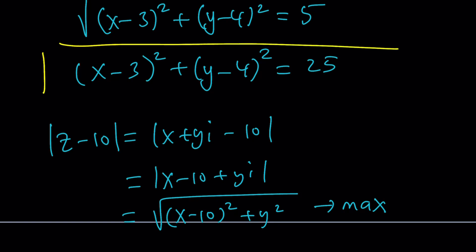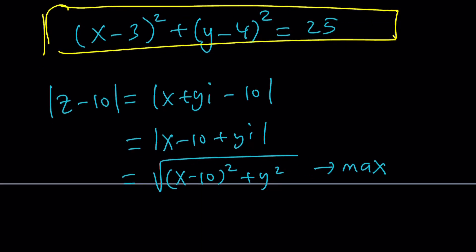X and Y are bound by the circle equation, and under that condition we want to maximize the distance expression — it's essentially an optimization problem. You could use Lagrange multipliers, differentiation, and so on. But the geometric method is a lot better, and you can test out some values to get the solution. Let's take a look at the graph to get a better idea of what's going on.